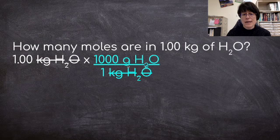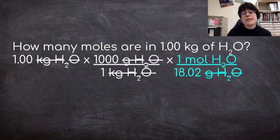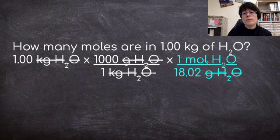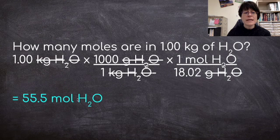Now I'm in grams, and I can use that number that I just calculated, because I now know that one mole of water is 18.02 grams of water. So the grams goes on the bottom, the moles goes on the top, because that's the number I'm trying to get to. Now I can do my math. I can multiply across the top and divide by what's on the bottom, and I get 55.5 moles of water.